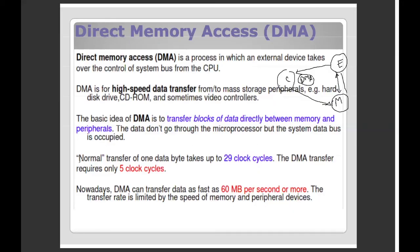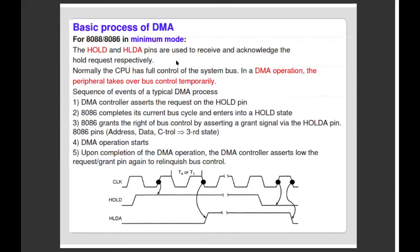We have to access the external device to the same memory. We transfer the DMA in the same clock cycle. The DMA transfer speed is up to 60 MB per instruction. So what we have to do is use HOLD and HLDA to allow the DMA controller to access memory. We will start the data transfer.